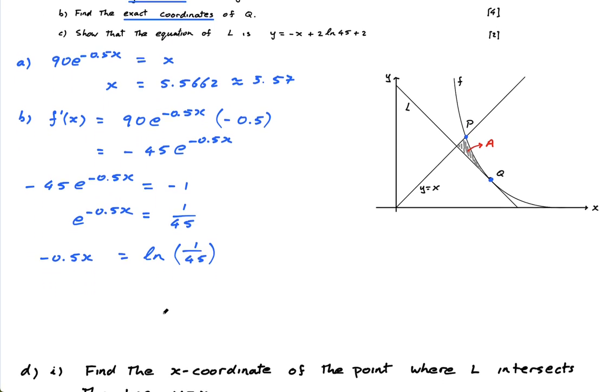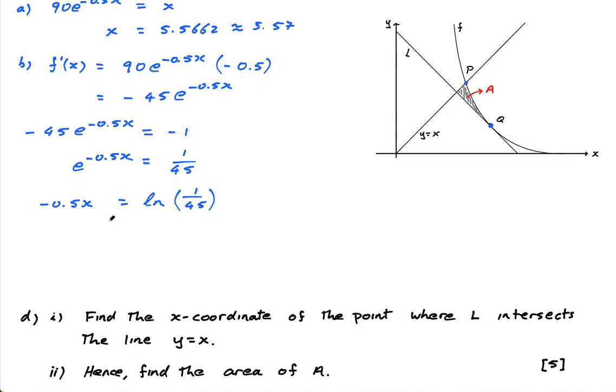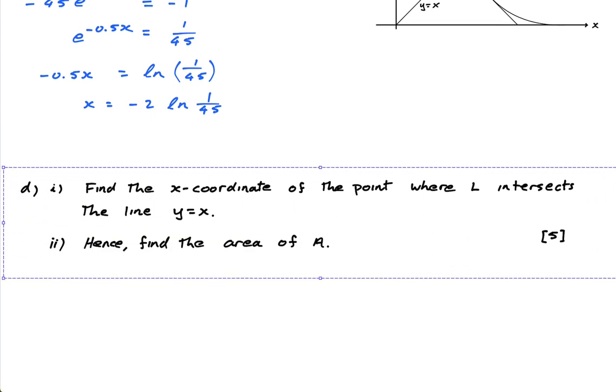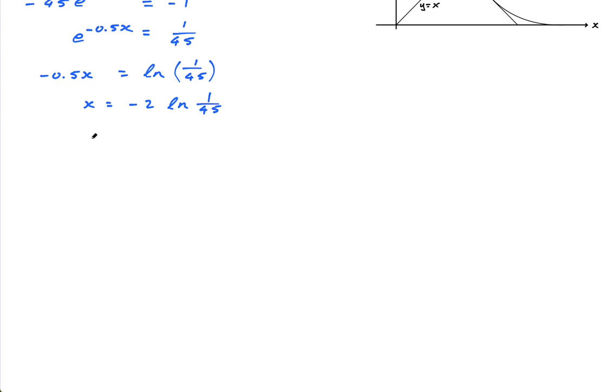And then finally, x equals negative 2 ln of 1 over 45, because I'm going to multiply across by negative 2 there. Now I can simplify this too guys. I can simplify this to x equals negative 2 ln of 45 to the minus 1, because this is underneath the line. And then this, using the power rule for logs, I can multiply by negative 1, which becomes 2 ln of 45.